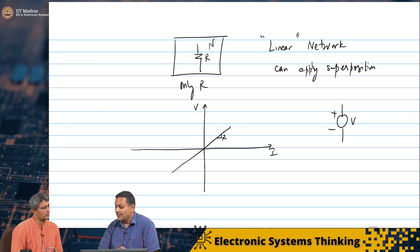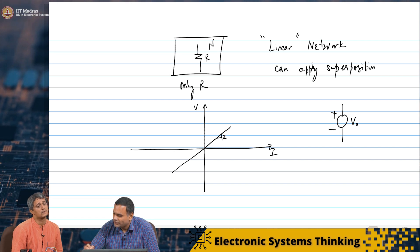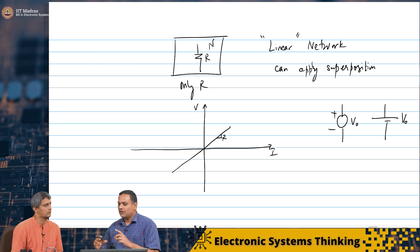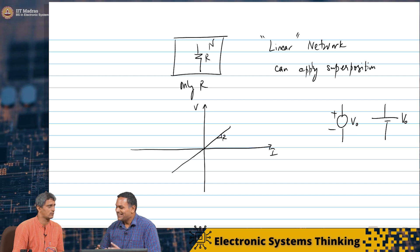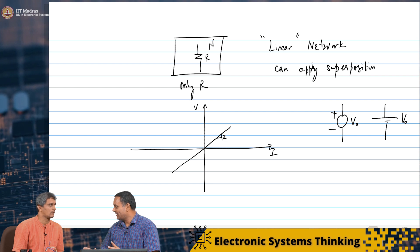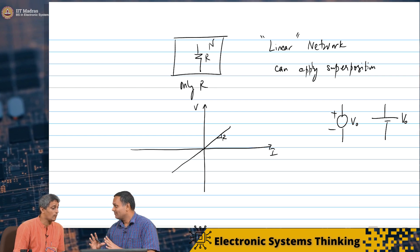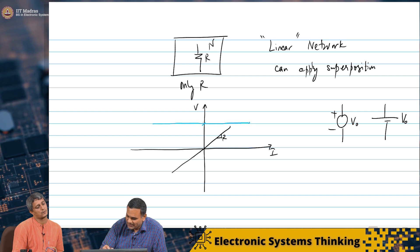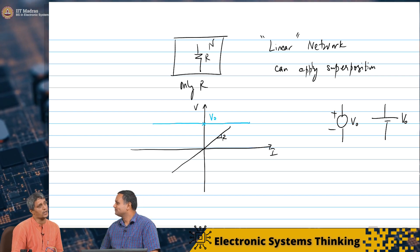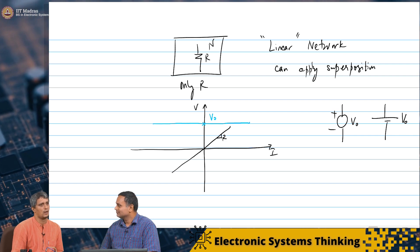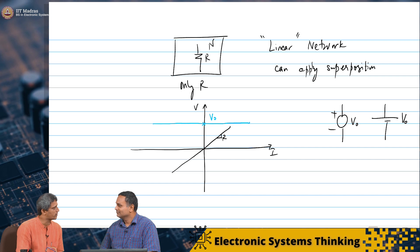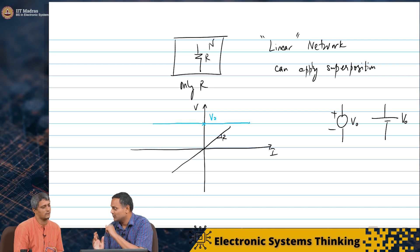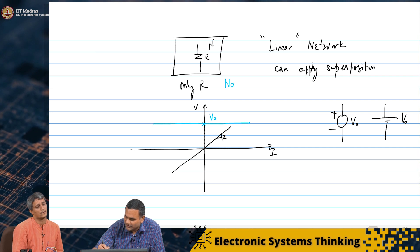Now, if you have an ideal voltage source with voltage V0 — a battery — the definition of an ideal voltage source is that it can give any current, positive or negative, but its voltage always remains the same. Its VI characteristic will look like this — irrespective of the current, you get the same voltage. It is a straight line, but it is not passing through the origin. So the network cannot have voltage sources.